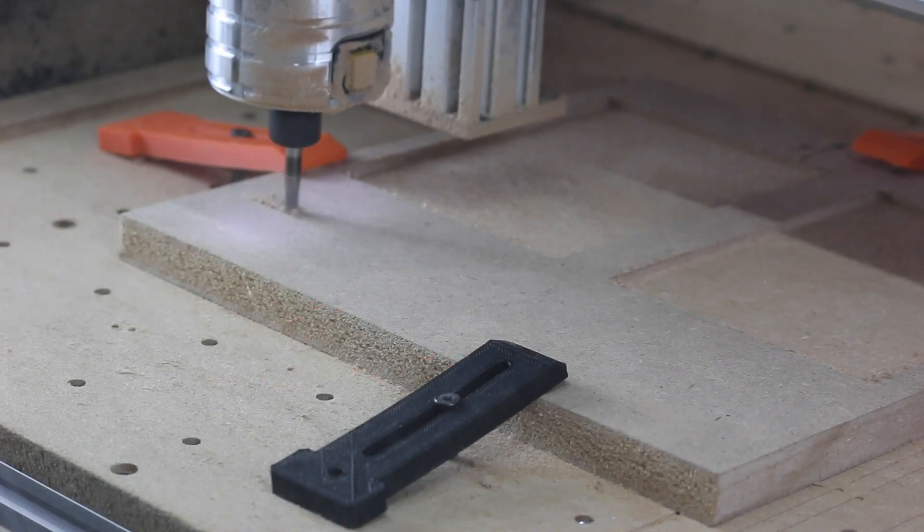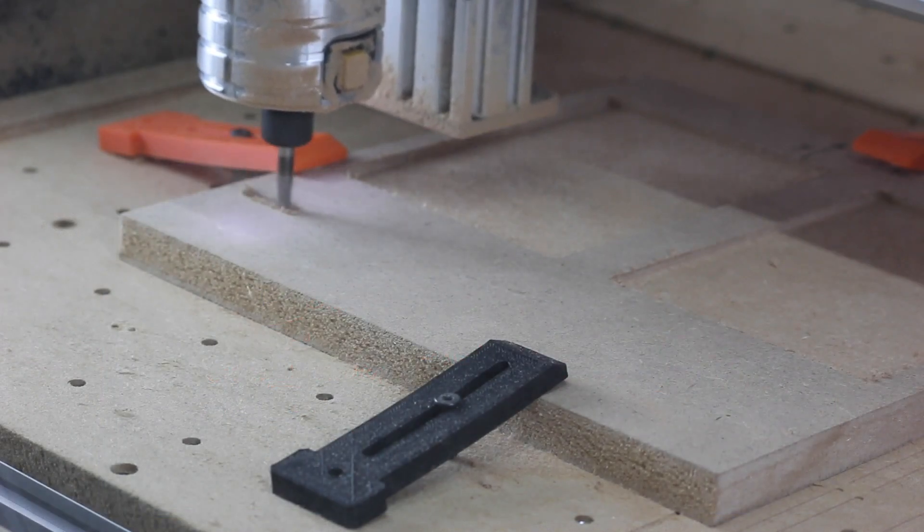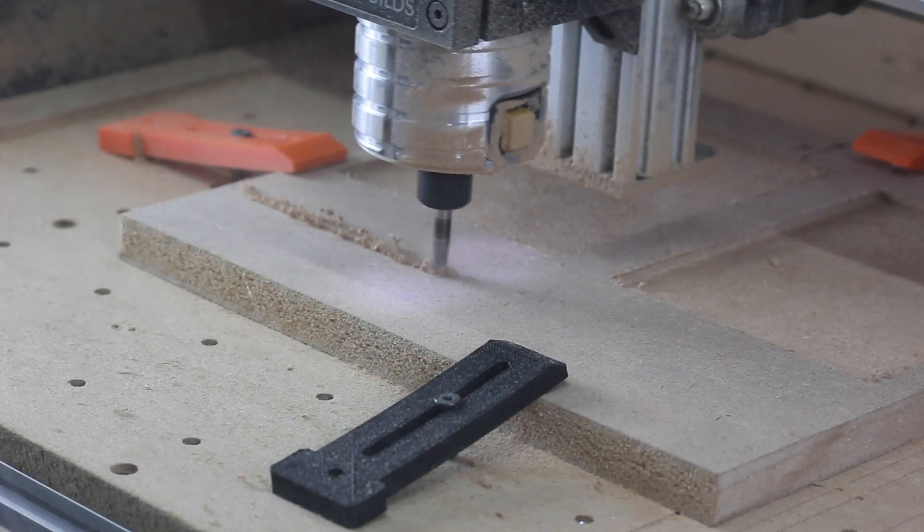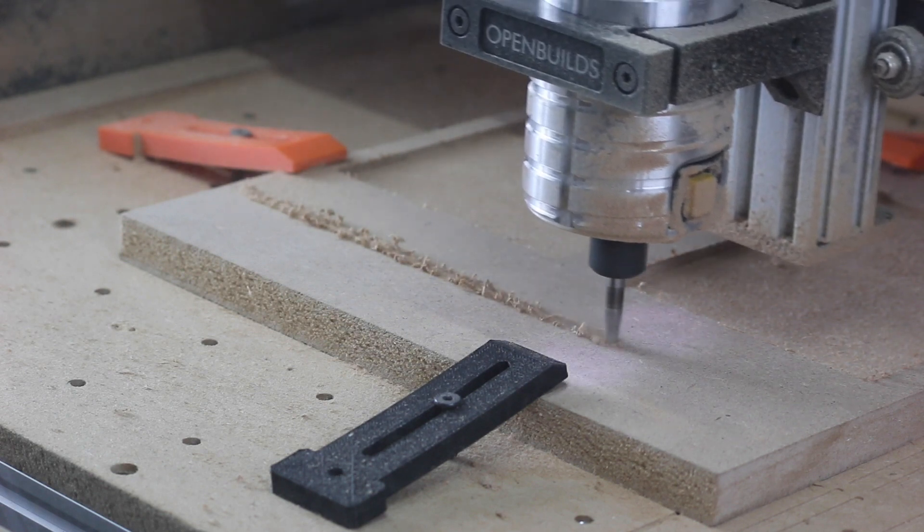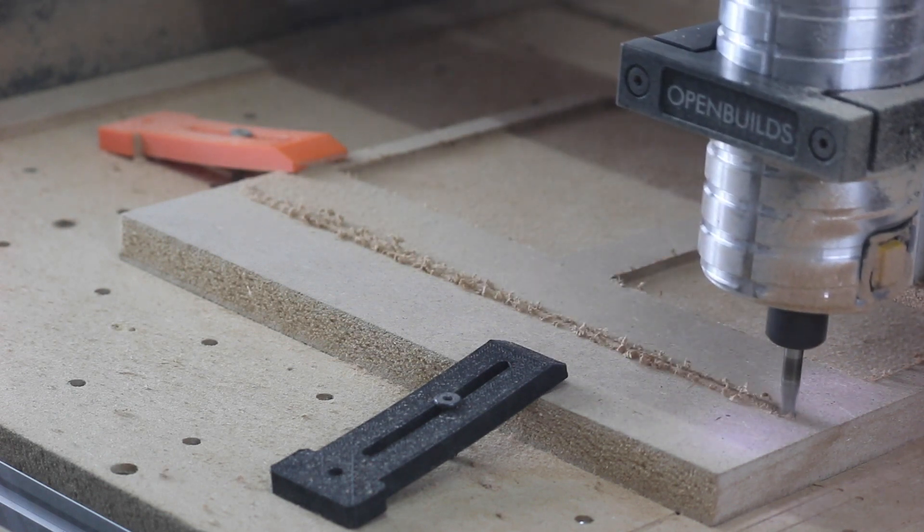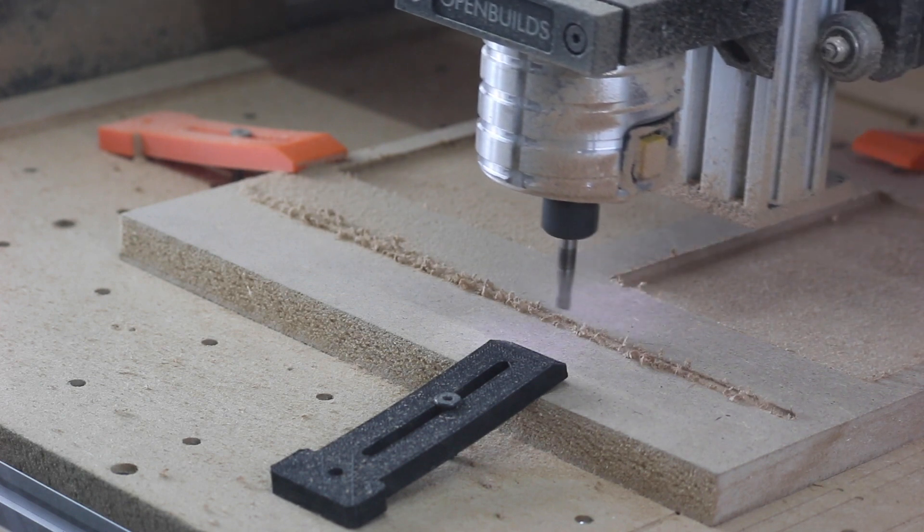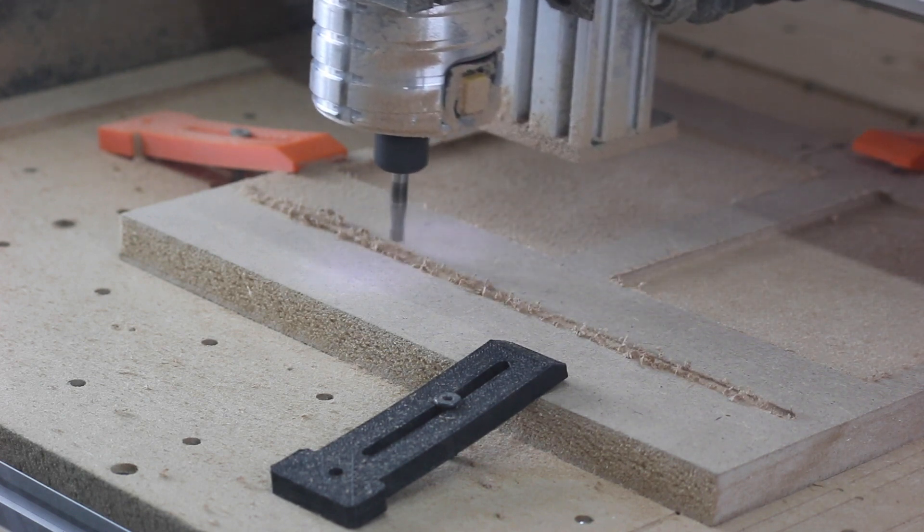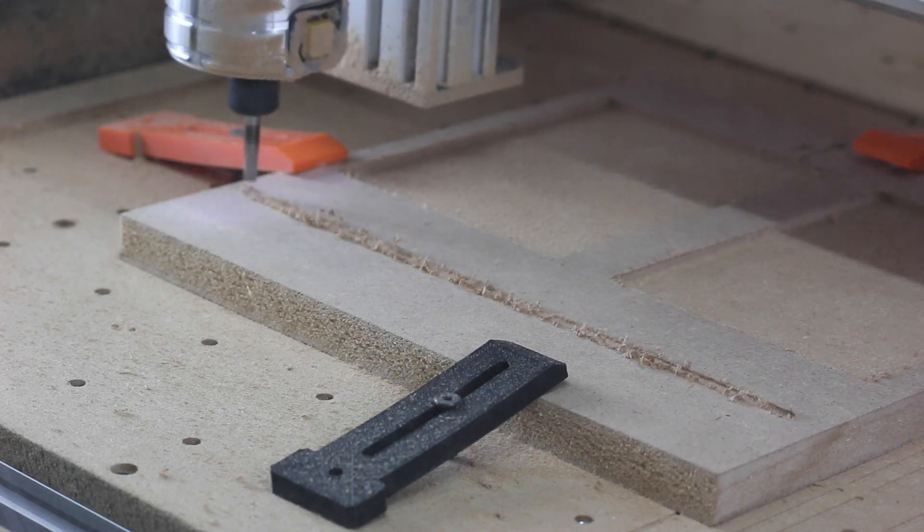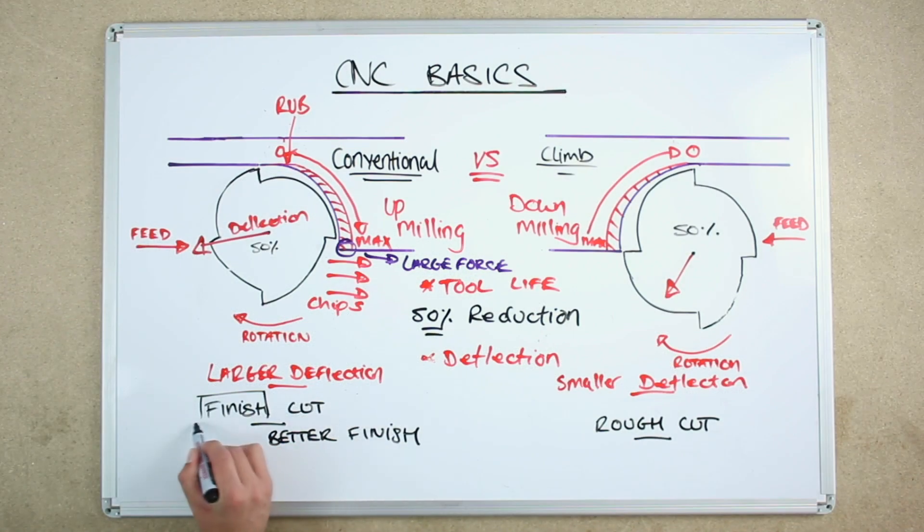When slotting, such as a profile cut, the end mill will be conventional cutting 50% of the time, and climb cutting the other 50%. So which direction you choose in your CAM program is not massively important. But a decision would need to be made on the machining direction if you decide to do a separate finishing pass.